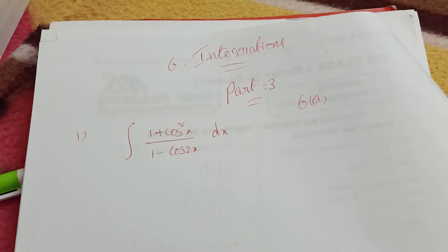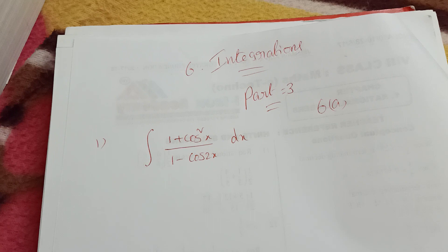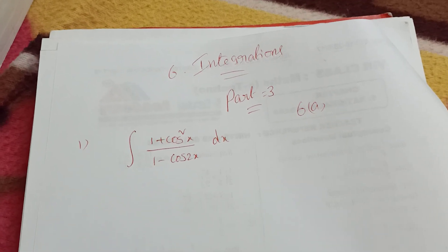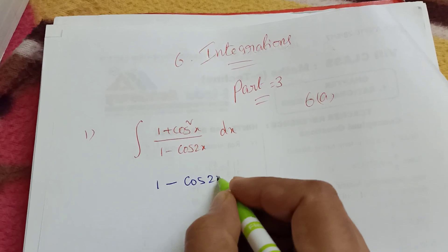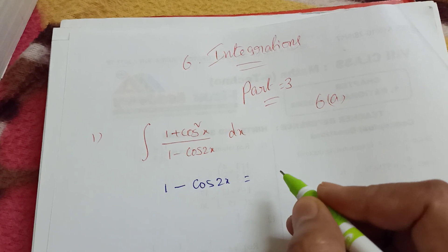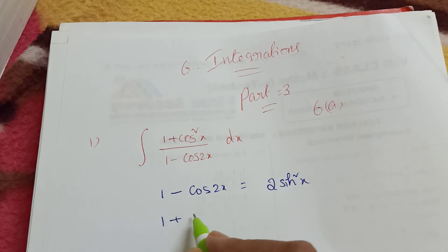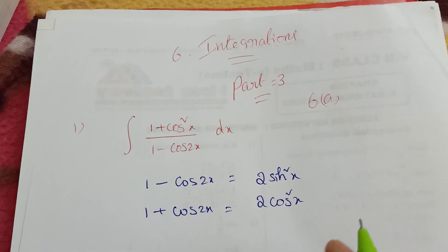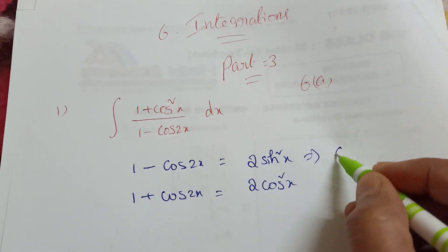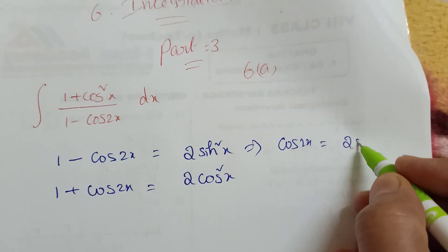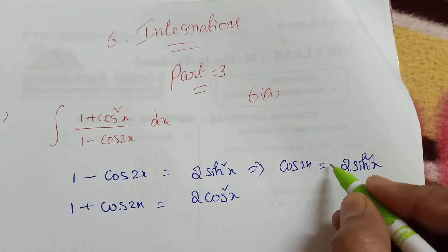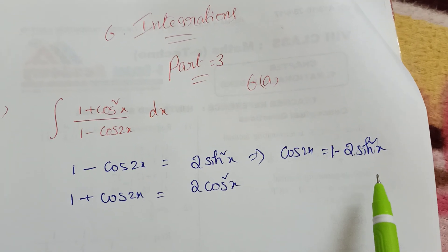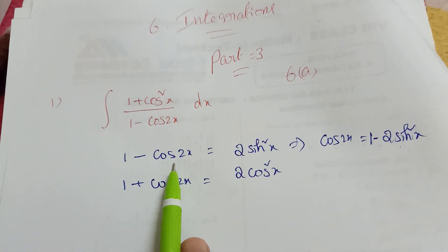Now let's see the first problem: integration of (1 + cos²x) / (1 - cos2x) dx. How to convert this? Remember the formula: 1 - cos2x equals 2sin²x. Also, cos2x in terms of sine is 1 - 2sin²x. So we want 2sin²x, that's why we use the formula 1 - cos2x.